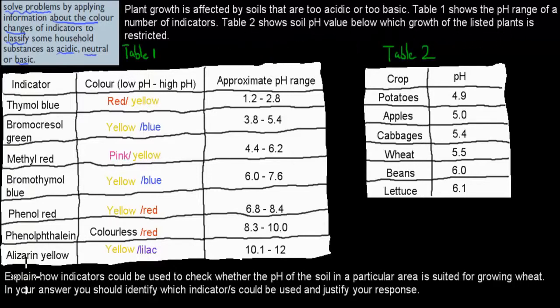So the actual question is explain how indicators could be used to check whether the pH of the soil in a particular area is suited for the growth of wheat. In your answer, you should identify which indicators could be used and justify your response. So this kind of question is quite common, and it tests your skills if you know what indicators are and how you could use them to actually assess things in terms of can things grow there, or is it acidic, neutral, or basic substance.